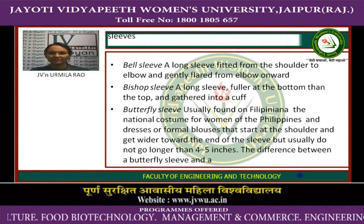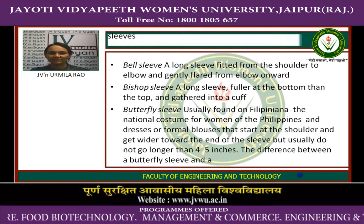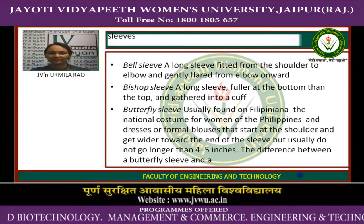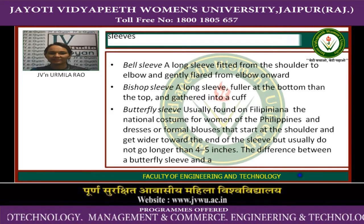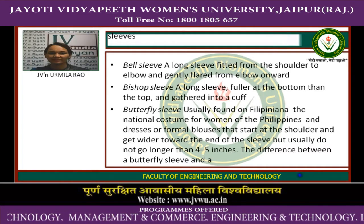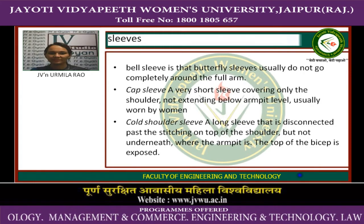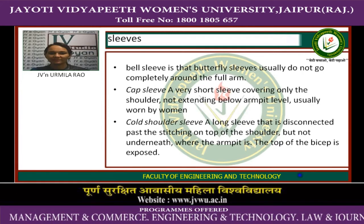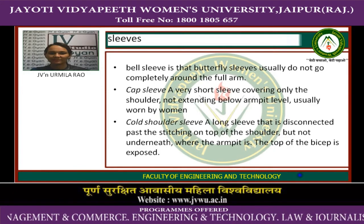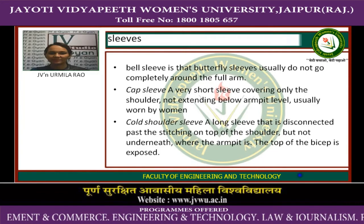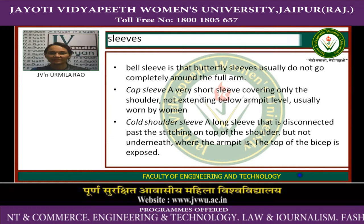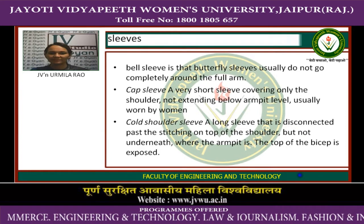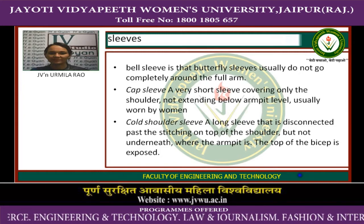Butterfly sleeve: usually found in Filipina national costume for the women of the Philippines, a dress or formal blouse sleeve that starts at the shoulder and gets wider toward the end but usually does not extend longer than four to five inches. The difference between a butterfly sleeve and a bell sleeve is that the butterfly sleeve usually does not go completely around the full arm. Cap sleeve: a very short sleeve covering only the shoulder and not extending below armpit level, usually worn by women. Cold shoulder sleeve: a long sleeve that is disconnected past the stretch on top of the shoulder but not underneath, where the armpit area is exposed.